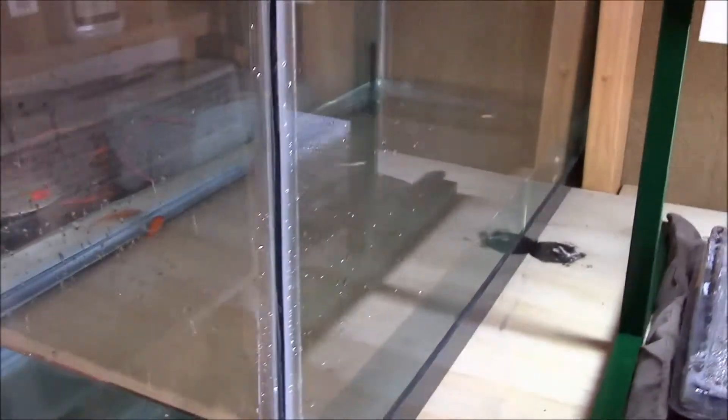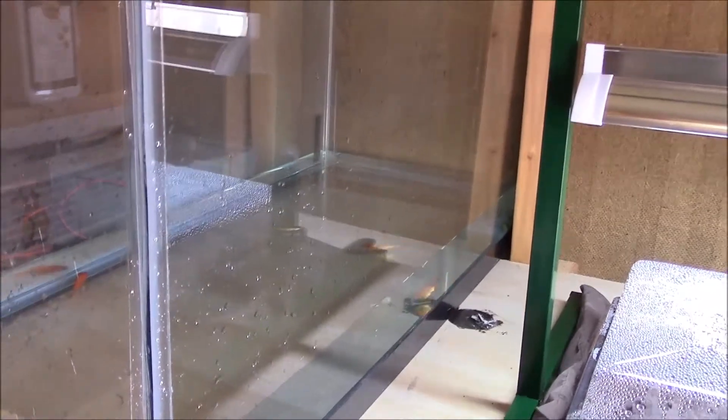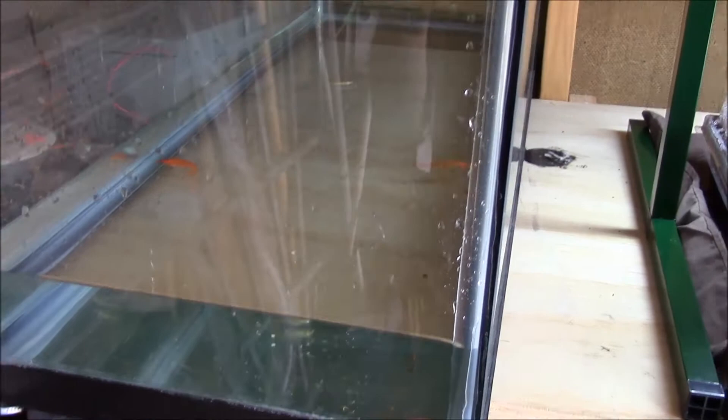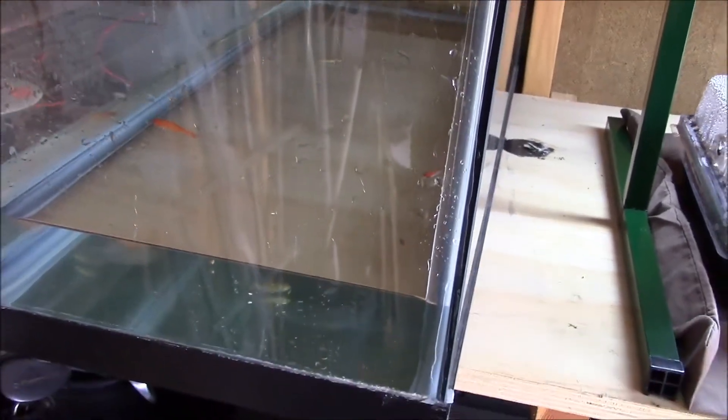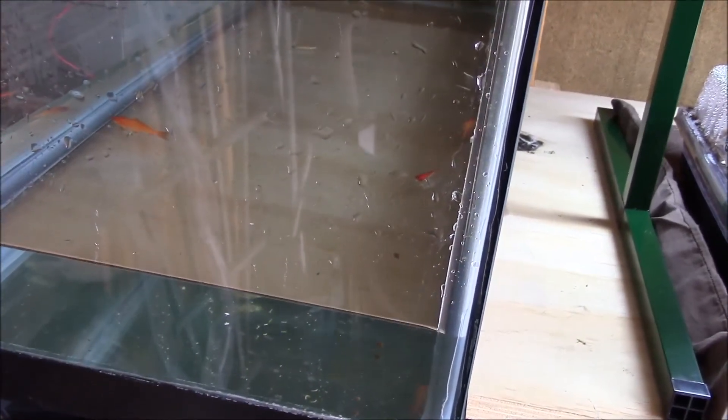All right there we go. So got all the fish in there. There's probably four or five gallons of water in there. This is a 20 gallon tank, so probably four gallons-ish. That's plenty for six fish.